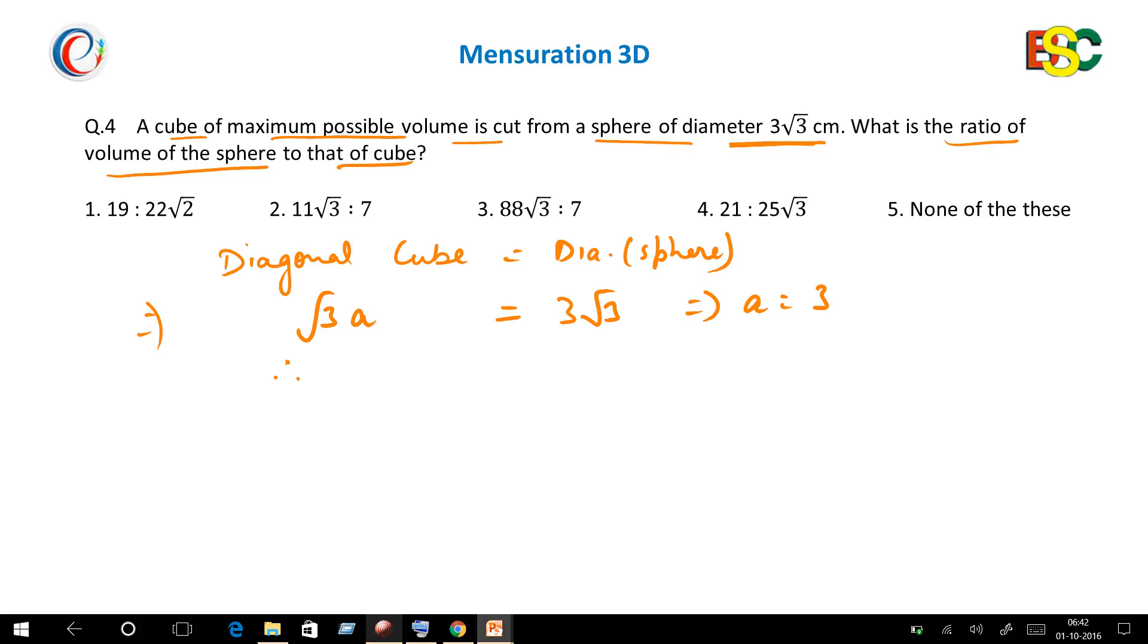You have to find the ratio of the volume of the sphere to the volume of the cube. The volume of the sphere is 4/3 πr³ to a³.